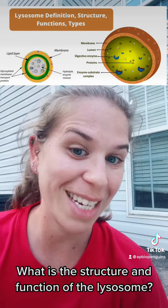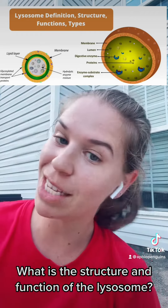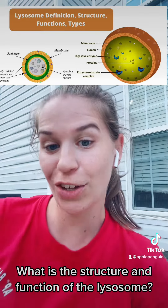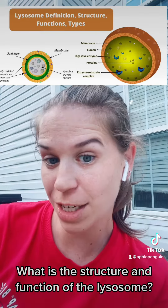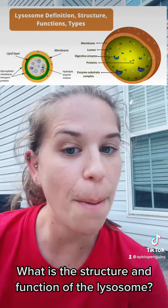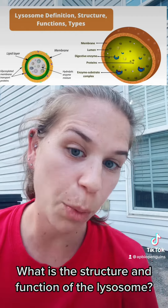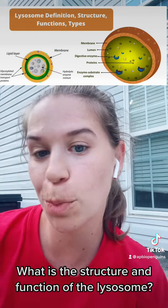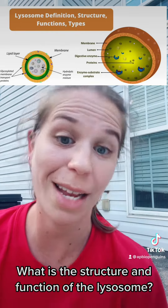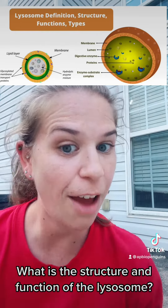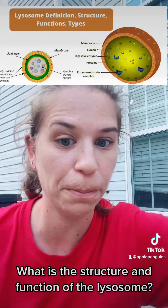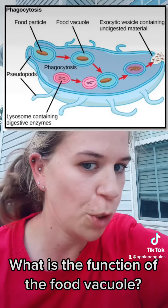You're often going to see lysosomes working with phagocytosis — cellular eating. When a cell goes through phagocytosis, that food vacuole is going to fuse with the lysosome to help break down and digest that food particle. There are three different types of vacuoles: the food vacuole, the contractile vacuole, and the central vacuole.